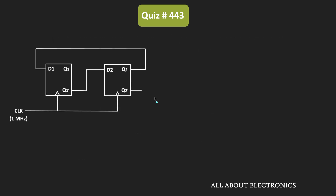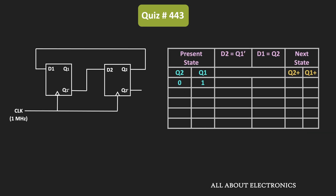We have already been given the initial states of the two flip-flops. Initially, Q2 is equal to 0, while Q1 is equal to 1. Q2 is directly connected to the D1 flip-flop, while Q1-bar of the first flip-flop is connected to the D2 input. That means D2 is equal to Q1-bar, while D1 is equal to Q2. According to these two inputs, the output of the flip-flop will change at the next clock pulse.